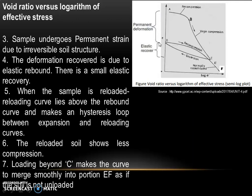The sample undergoes permanent strain due to irreversible soil structure, and permanent deformation is shown on the graph. The deformation recovered is due to elastic rebound, showing a small elastic recovery. When the sample is reloaded, the reloading curve lies above the rebound curve and a loop is formed between the expansion and reloading curves. The reloaded soil shows less compression, and loading beyond point C makes the curve merge smoothly into portion E, as if the soil was not unloaded.